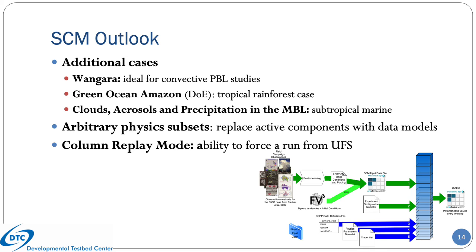We are creating the capability to run arbitrary subsets of a physics suite by creating data models that can be used to replace active components, which will be very important for hierarchical testing as it will allow testing individual parameterizations. Our next release will have the column replay mode, or the ability to force a single-column model run from files saved from a previous UFS run. This complements the use of forcing derived from field campaign observations, with the flow of information from the FV3 dynamical core to the SCM.